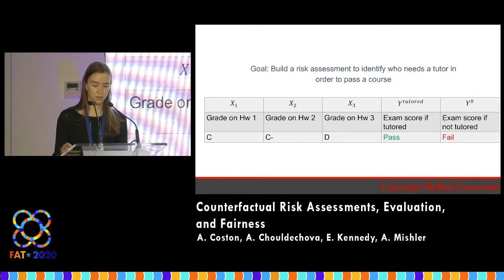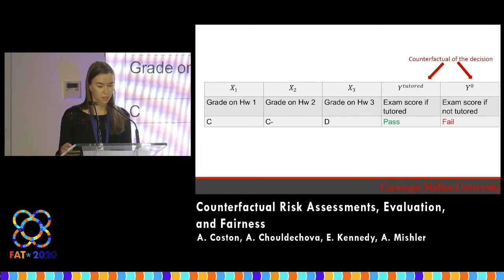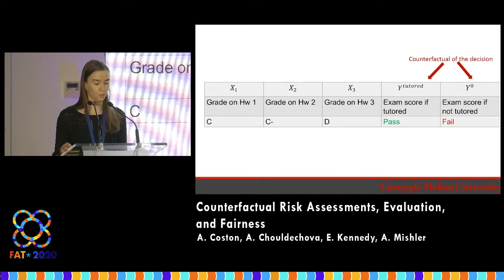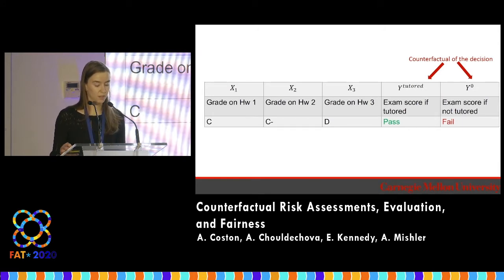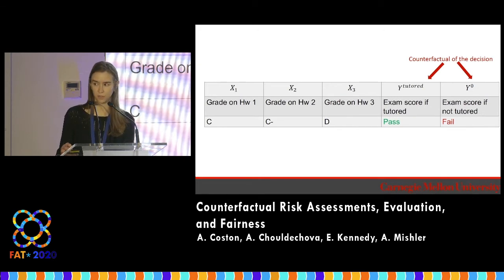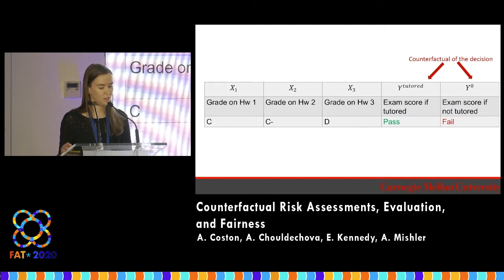In causal inference, these are known as potential outcomes — counterfactual outcomes that we would observe if we made a particular decision, where the decision is noted in the superscript on Y. So we have the Y we would see if the student was tutored, and the Y we would see if they were not tutored, which I've used a zero to indicate. This contrasts with the literature on counterfactual fairness that considers counterfactuals of the protected attribute; in our work, we're focusing on counterfactuals of the decision at hand.